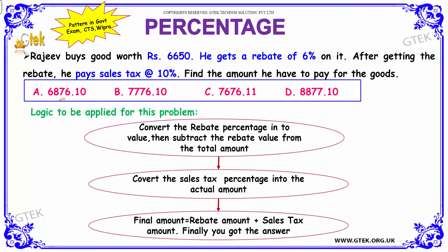The options are: A) 6876.10, B) 7776.10, C) 7676.11, D) 877.10.